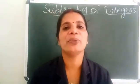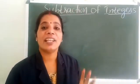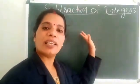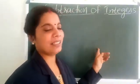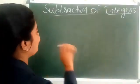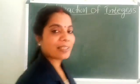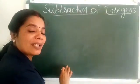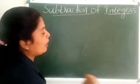How to subtract two integers? We know that in addition, adding a positive integer means moving to the right on the number line. So in subtraction, how do we subtract two integers on a number line? To subtract a positive integer on a number line, what do we do?